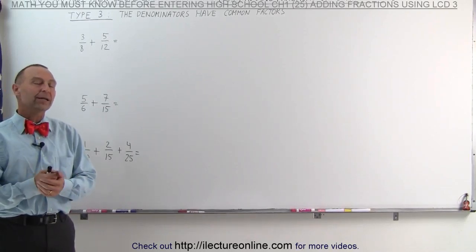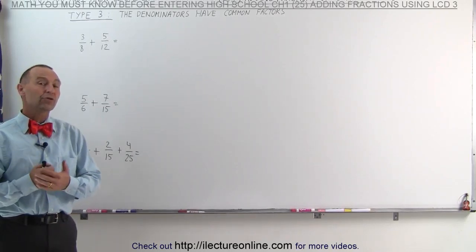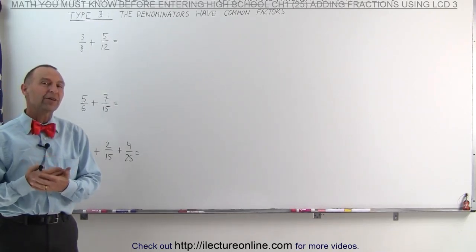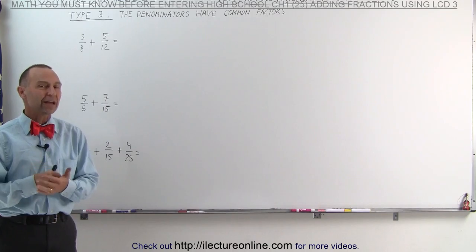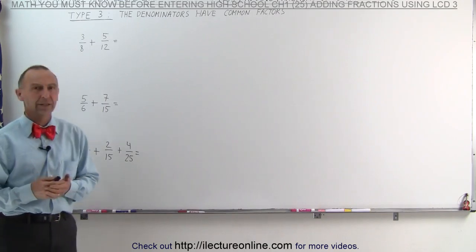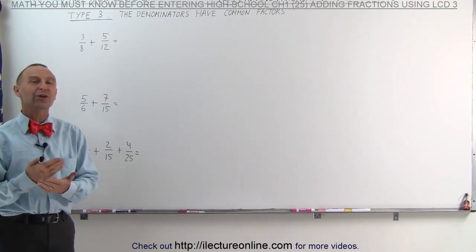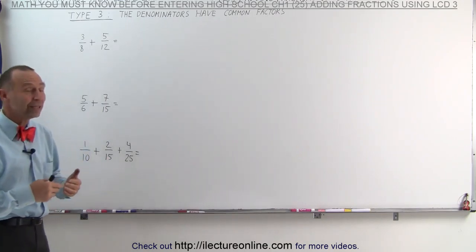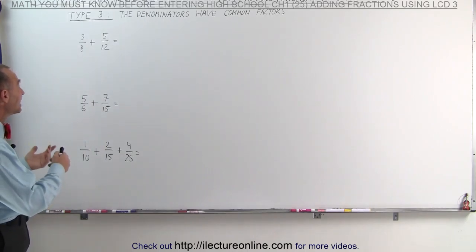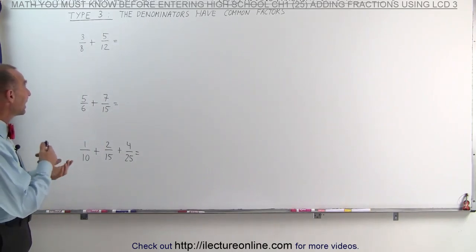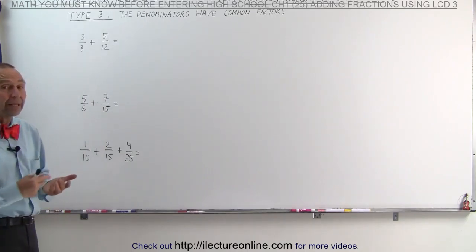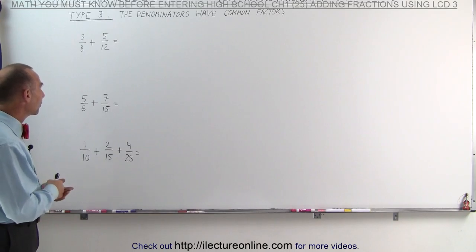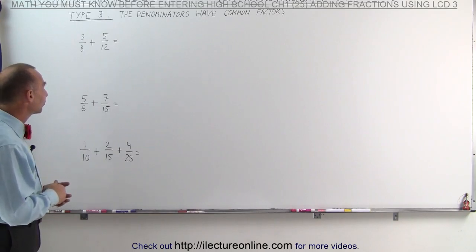Welcome to ElectronLine. When you're trying to add fractions and the denominators have common factors, you must first find the lowest common denominator by using the technique where we take each of the denominators and write them as a product of their prime factors.